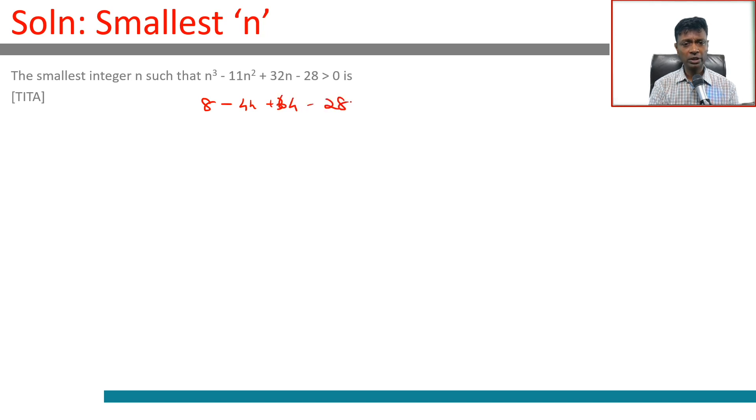So this number n³ - 11n² + 32n - 28 is a multiple of n - 2. We can factorize this. n² goes here, n³ - 2n².